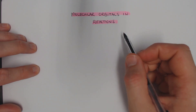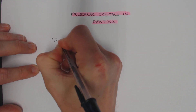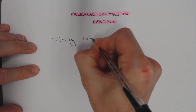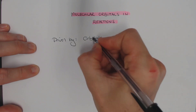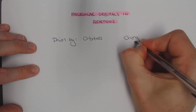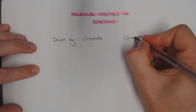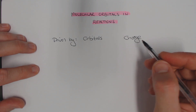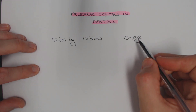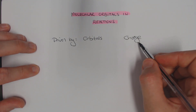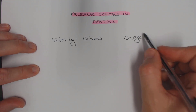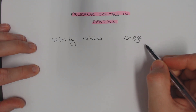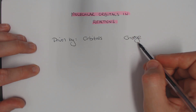When bonds form and break in reactions, they are driven by two factors. The first is orbitals, and the second is charge. Charge is your pluses and minuses — a positive charge attracts a negative charge, and that kind of thinking is pretty much entrenched in the way you've dealt with chemistry so far. It's an important factor, and we will always be looking at charge when we do reactions.